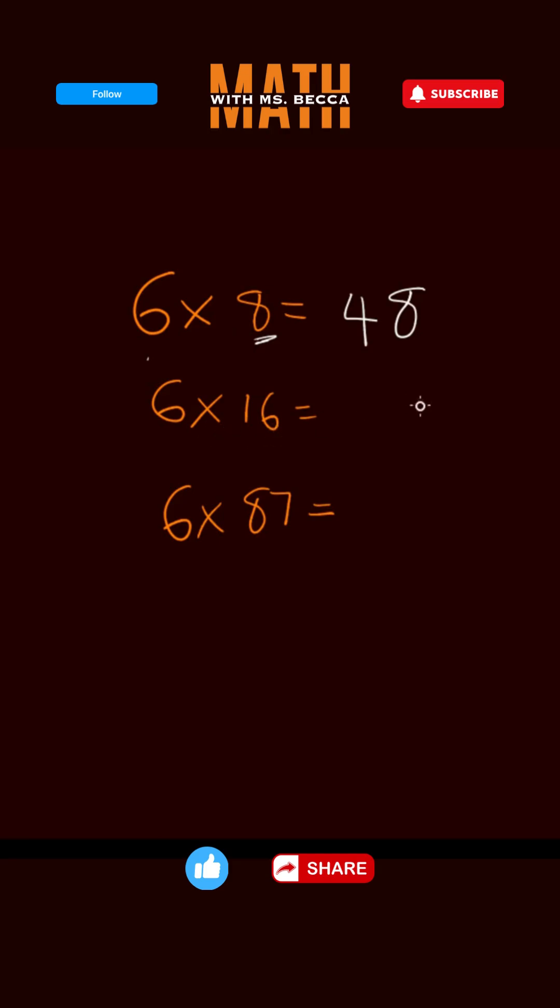Now to multiply 6 times 16, the unit will be 16, but we cannot write 16 since the unit is supposed to be one digit. So you write 6. You put the one here. What is half of 16? Half of 16 is 8. So you add that one to this 8, so that 6 times 16 will be 96.